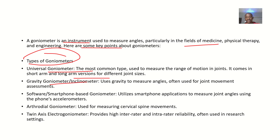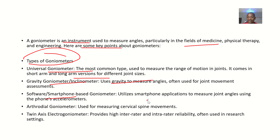There is also the gravity goniometer, or inclinometer. This one uses gravity to measure angles and is often used for joint movement assessment.